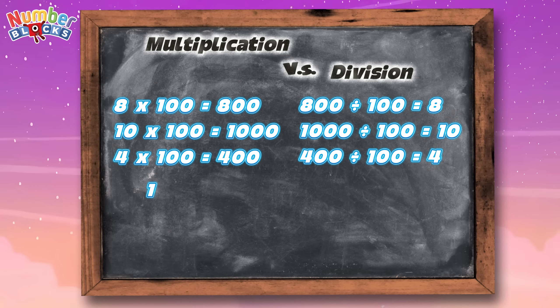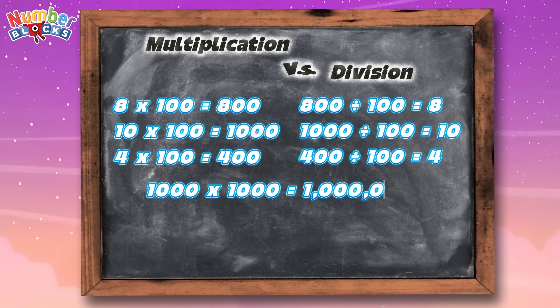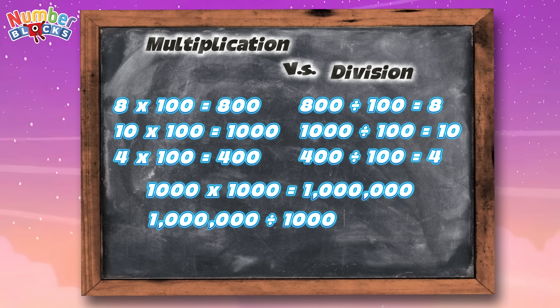One thousand multiplied by one thousand is equal to one million. In division, one million divided by one thousand is equal to one thousand.